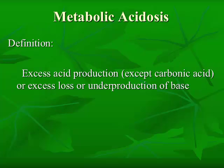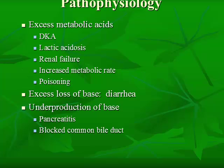Metabolic acidosis is defined as excess acid production — except for carbonic acid — or an excess loss or underproduction of base. The pathophysiology: excess metabolic acids could cause it, usually from excess ketones as in diabetic ketoacidosis, lactic acidosis from shock, renal failure due to tubular necrosis where the body can't eliminate extra acid, increased metabolic rate from heavy exercise, seizure activity or fever, or ingestion of acidic substances such as poisoning with ethanol, methanol, ethylene glycol, and aspirin.